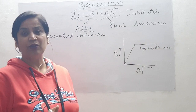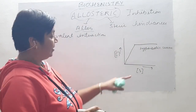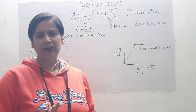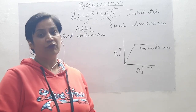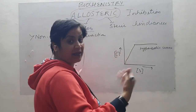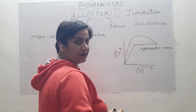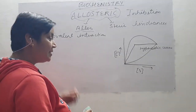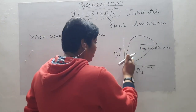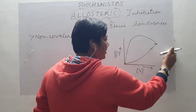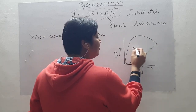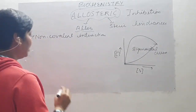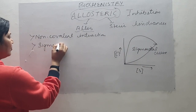In allosteric inhibition it is altogether different. There is no binding of the modulator to the active site; it binds to a site totally different from the active site, bringing a conformational change. If a modulator is helping, it is positive cooperativity; if not, it is negative cooperativity. There is a difference in the curve — during allosteric inhibition the curve is sigmoidal. Another key point: allosteric inhibition always gives a sigmoidal curve.